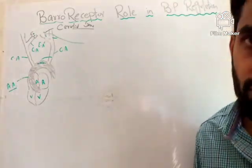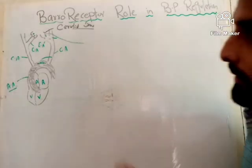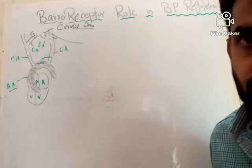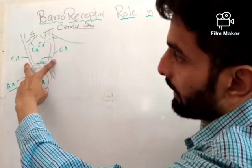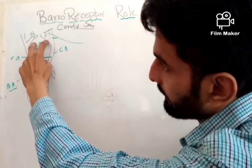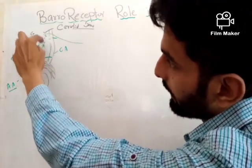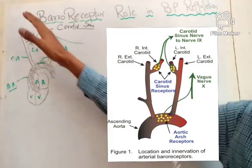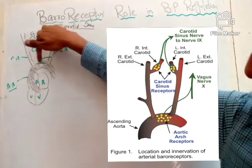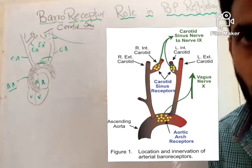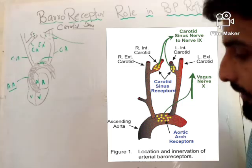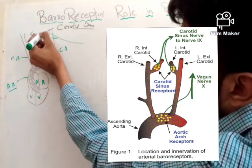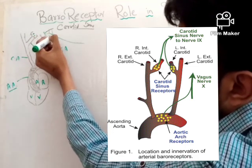They sense blood pressure and send messages to the brain for regulation. For example, here you can see these are the atrium, these are the ventricle, this is the aortic arch, and similarly these are the external carotid arteries, these are the internal carotid arteries. In the internal carotid artery you can see the carotid sinus. On the carotid sinus wall and on the aortic arch wall, nerve endings are present.